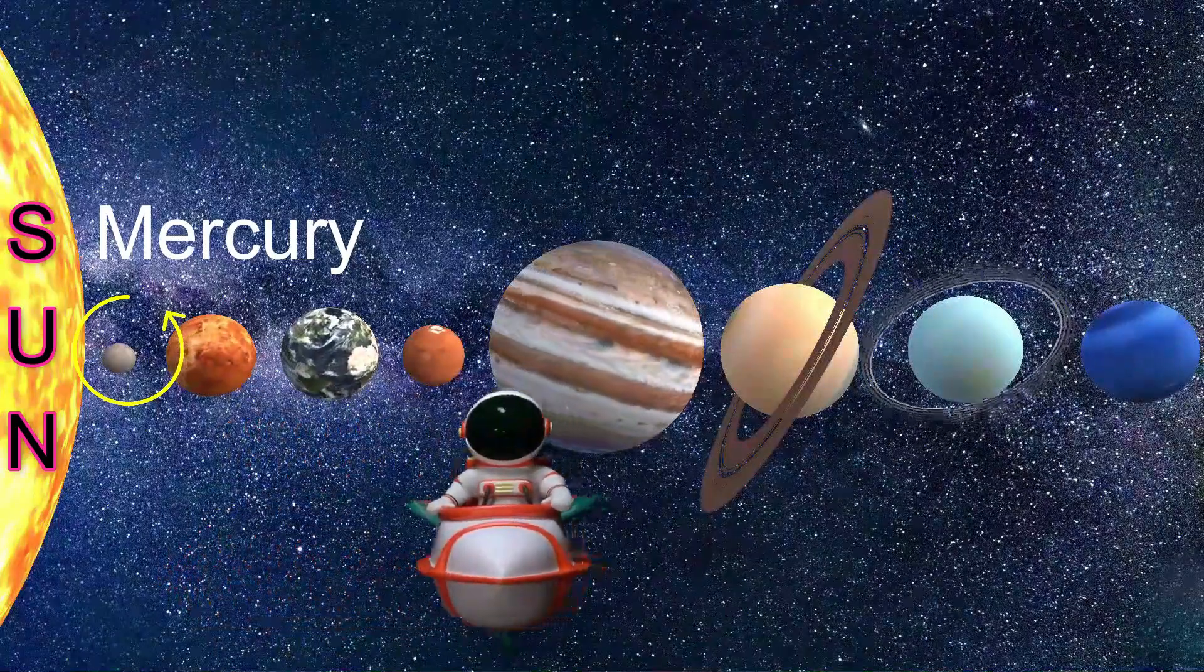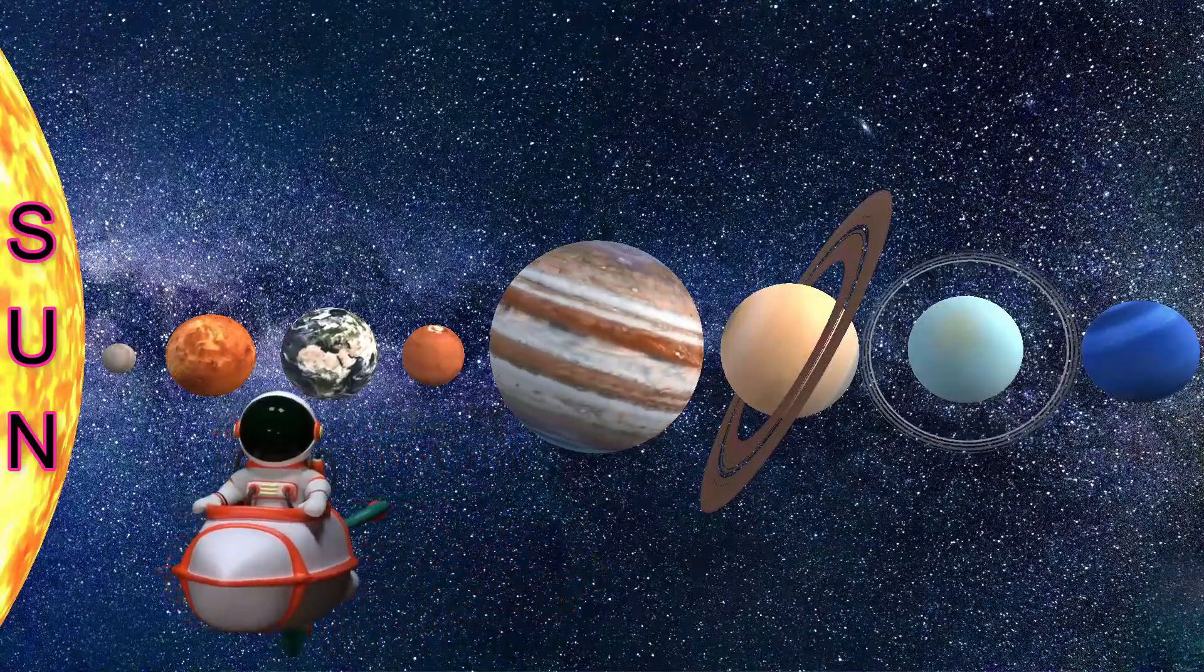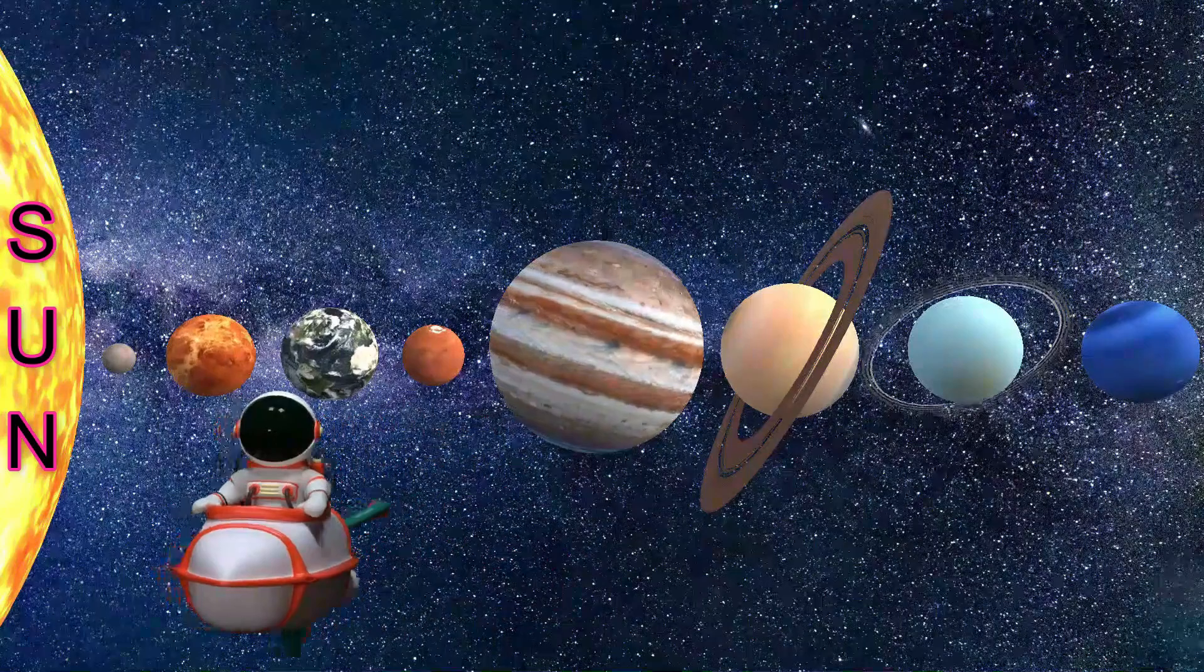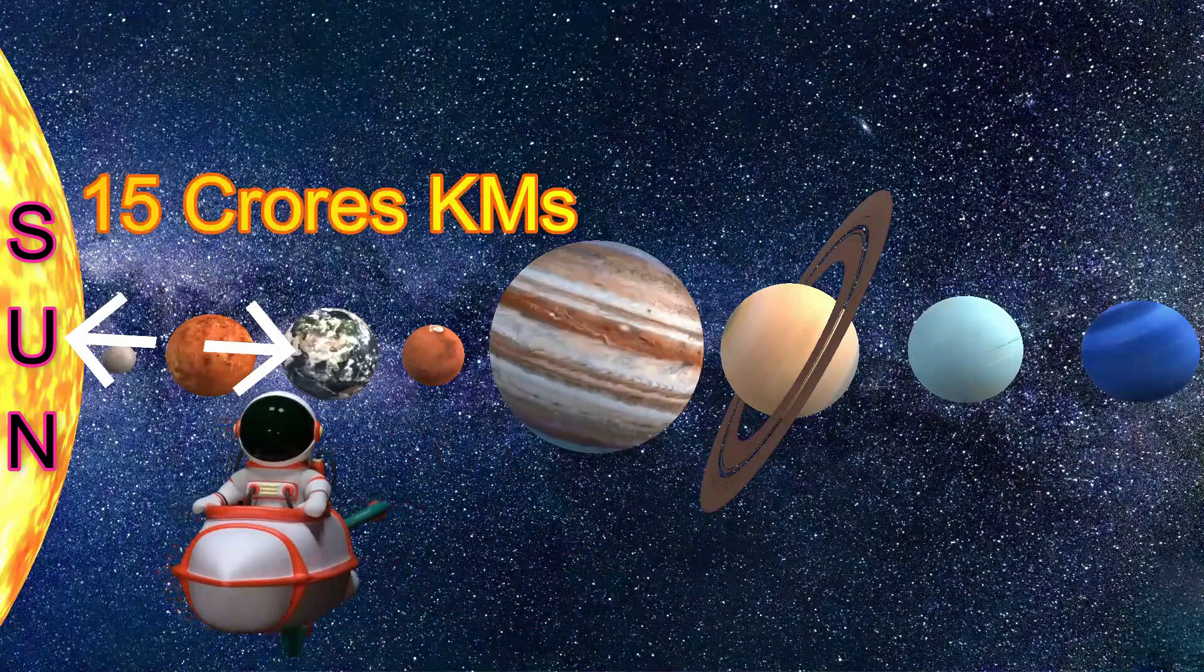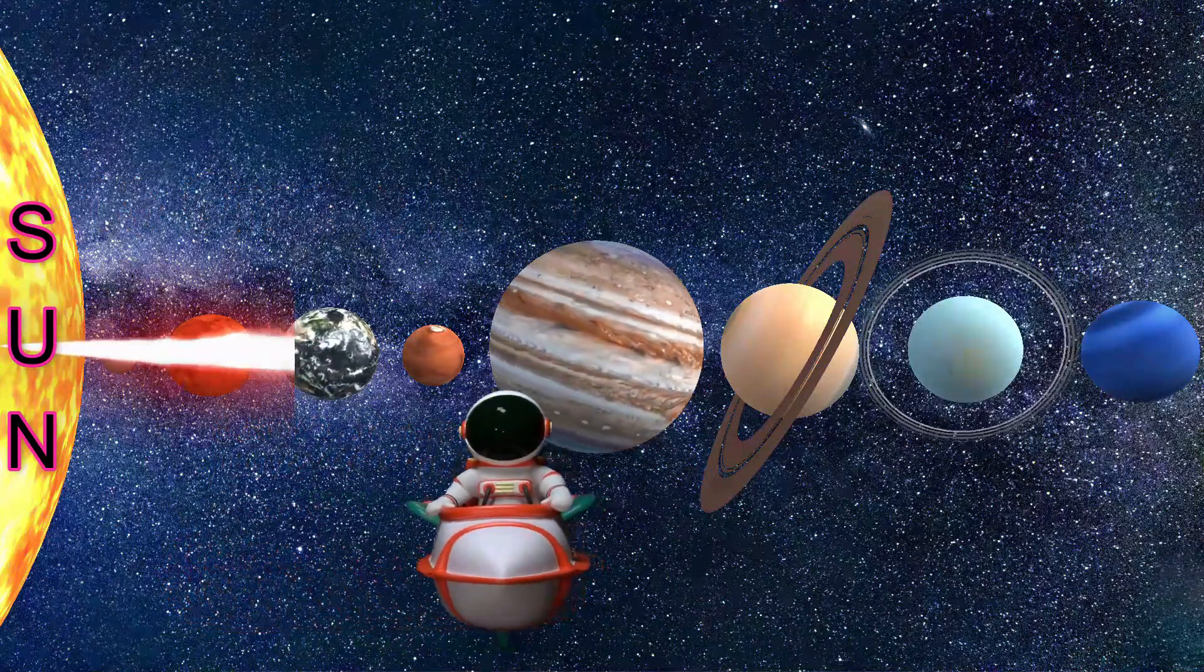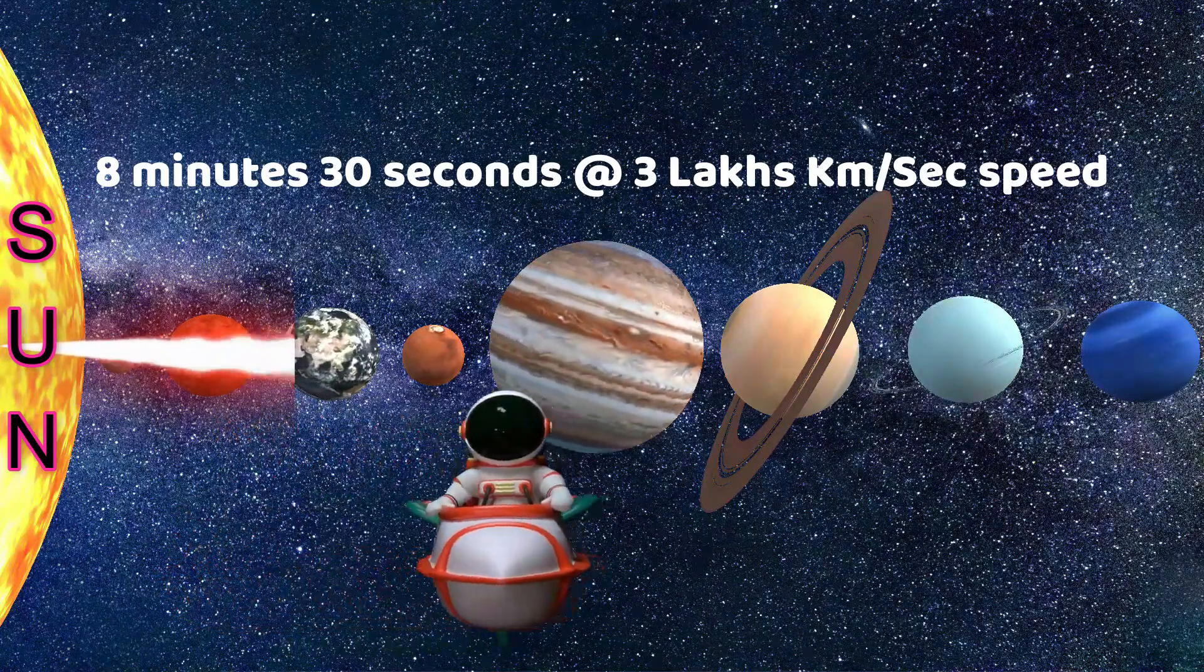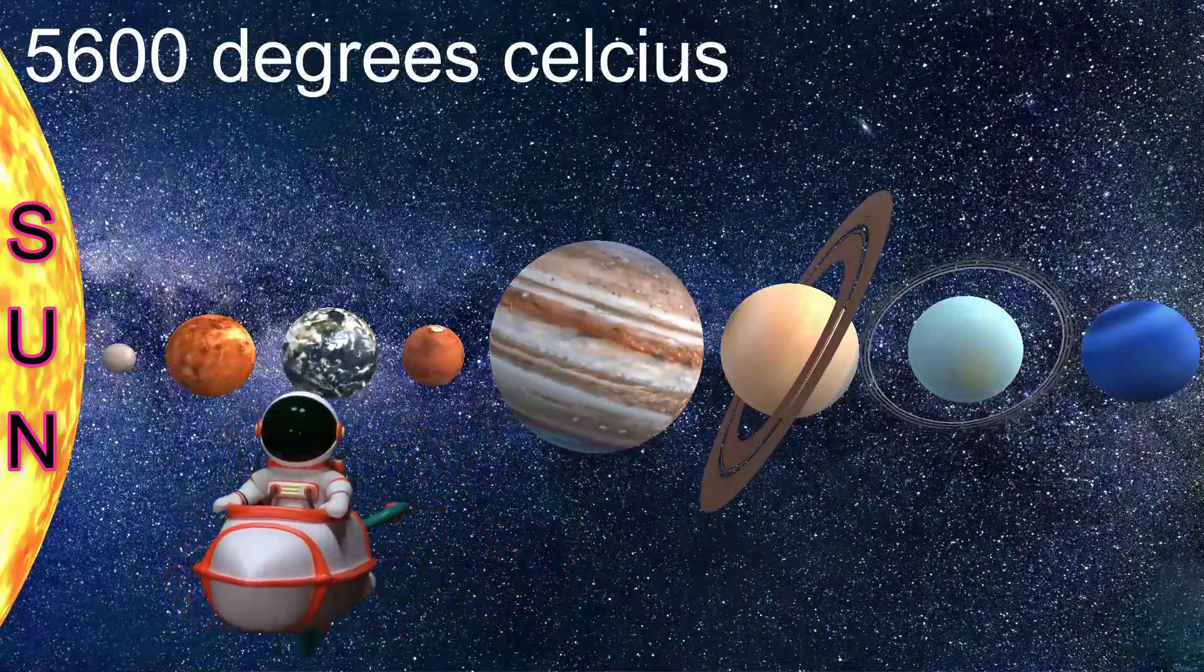Mercury is the smallest planet. Neptune is the farthest planet. The only star in our solar system and powerhouse is sun. The sun is approximately 15 crores kilometers away. And the sun's light takes 8 minutes 30 seconds to reach Earth. Light travels at 3,00,000 km per second.